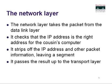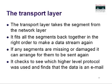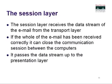The network layer takes the packet, checks that the IP address is correct for the cousin's computer, strips off the IP address and other packet information leaving a segment, and passes it up to the transport layer. The transport layer fits all the segments back together in the right order to recreate the data stream. If any segments are missing or damaged, it can arrange for them to be resent. It checks which higher-level protocol was used and finds that the data is an email. The session layer then receives the data stream and, if the whole email has been received correctly, closes the communication session and passes it up to the presentation layer.